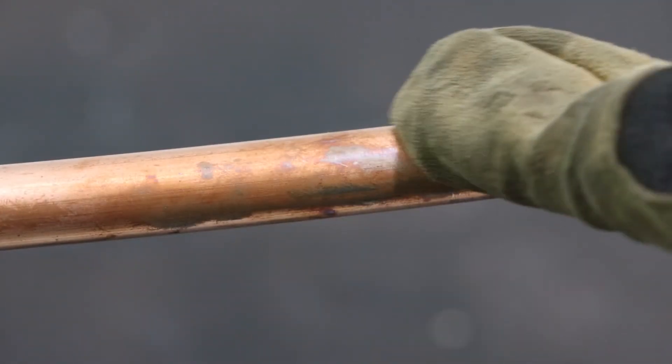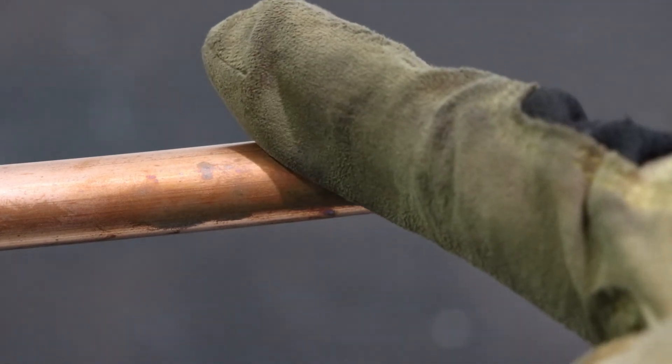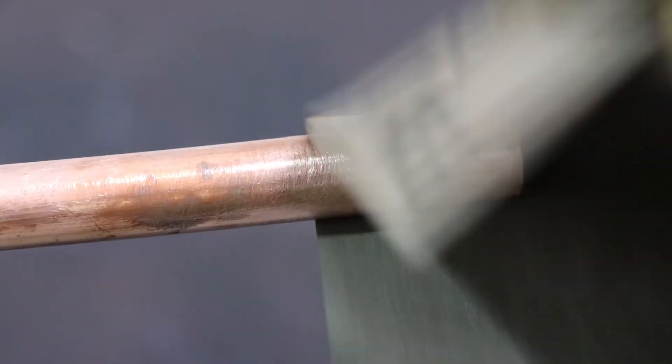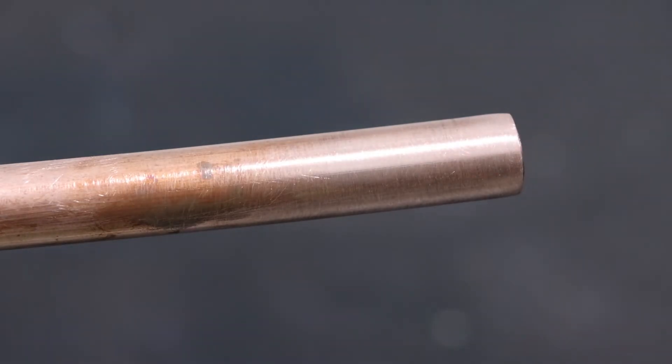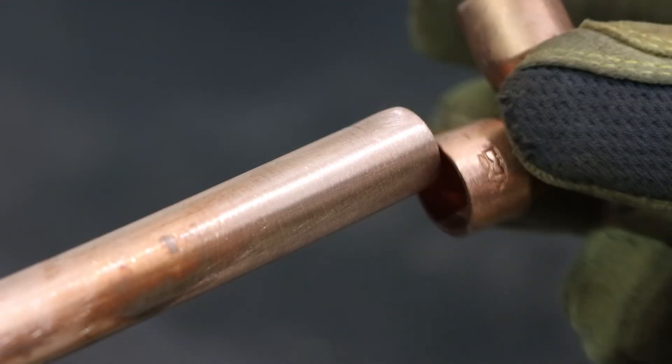This pipe looks pretty fresh, but to get a good braise, what we want to do is just tidy up the surface with a bit of sandpaper. So cue some jazz. There we go. Beautiful. All right, so we're nice and clean and we're going to be braising this little elbow on.